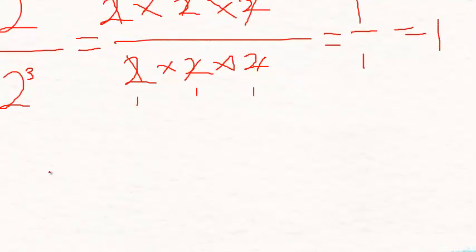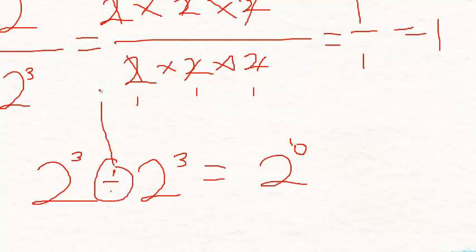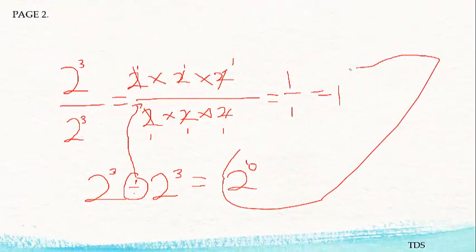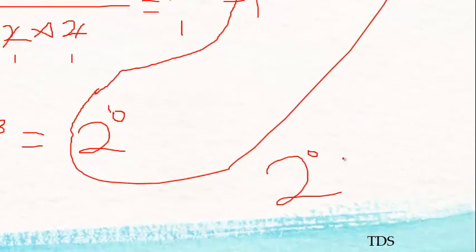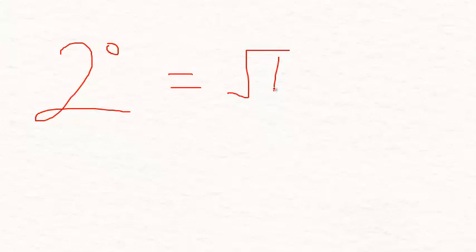One times one times one times one times one times one equals one, so the result is one. Since two to the power three over two to the power three equals two to the power zero, and it also equals one, we conclude that three to the power zero equals one. Any number to the power zero equals one.